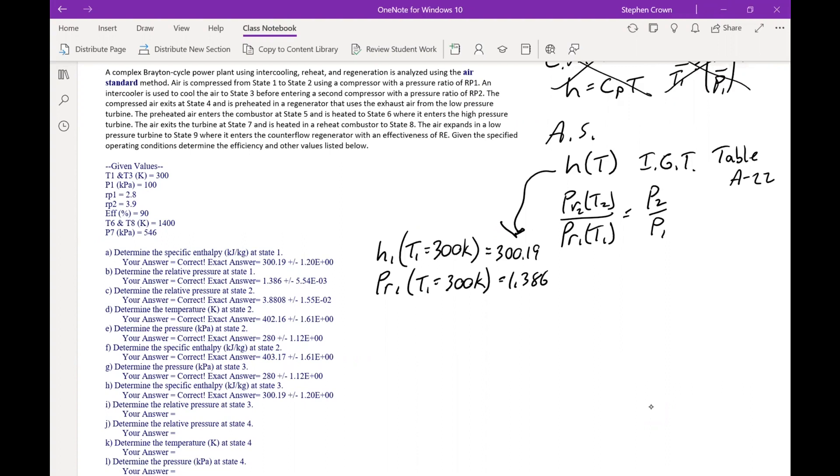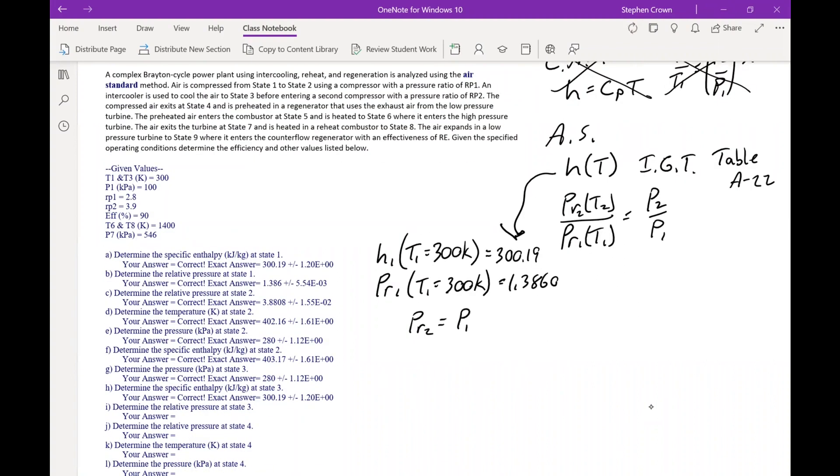So in this case, you'll notice that was the same value we got for our simple Brayton cycle. And that's because we had the same temperature, T1, as we do in this problem. Then to find PR2. So our first process is compressor 1. So that is an isentropic compressor. So we find that PR2 equals PR1, which is a function of T1, times our pressure ratio, P2 over P1, which is given, which is called RP1. So in this case, RP1 equals P2 over P1, and RP2 equals P4 over P3.